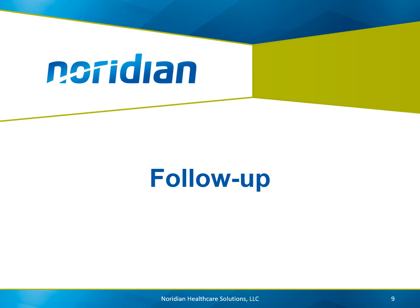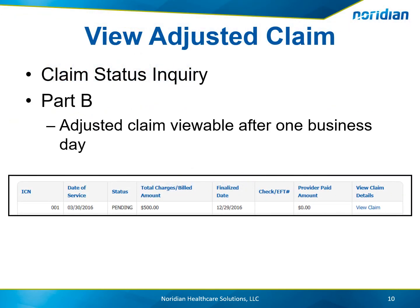Once the reopening has been submitted, providers are able to view the adjusted claim. To view the claim, perform a claim status inquiry entering the provider combination and required beneficiary elements. The adjustment with the claim number ending with the number 1 will display in a pending status until it is fully processed. Part B adjustments display under claim status after one business day.